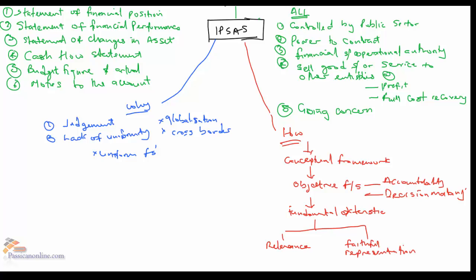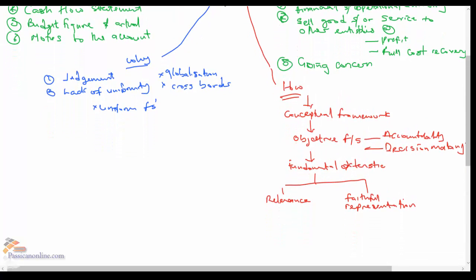And to aid this objective, the conceptual framework also went to give what we call fundamental characteristics of a financial statement, which are: one, relevance, and two, faithful representation. Faithful representation is saying that information contained in financial statement must not exclude any information that is capable of obtaining the view of any of the users. Financial information must be one, complete; two, neutral; and must be three, free from error as much as possible.